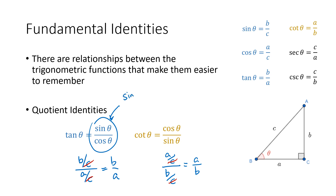So the way we should really write this is sine of theta using function notation, cosine of theta using function notation. When it would be potentially confusing, we will write it like that, but normally we write these trig functions without the parentheses. You just have to understand that you can't cancel out the thetas in that fraction because there is no multiplication happening there. That's not sine times theta — that's sine of theta. It might seem like a subtle difference, but it's very important for us to understand what we can do algebraically when we have expressions involving trig functions.